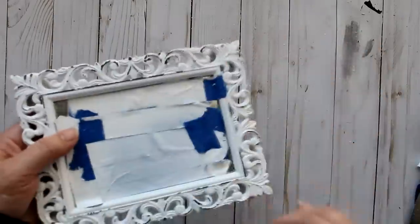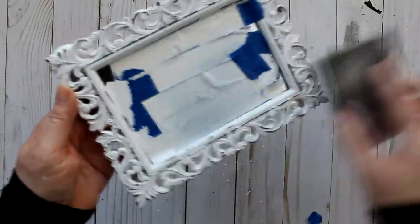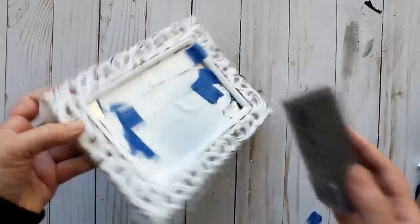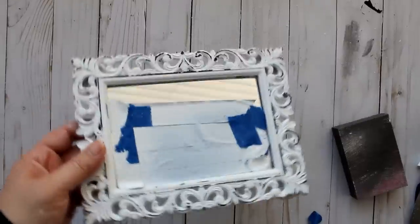Once the paint has dried I'm going to take a sanding block that I also purchased from the Dollar Tree and just go over the tops of the frame or the mirror's frame and just take off some of that paint to give it a distressed look. And then once that's done I'm going to just remove that tape from the mirror.